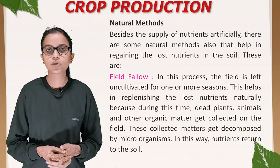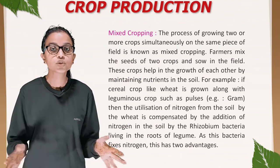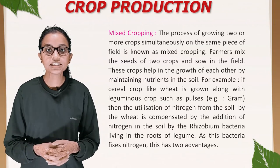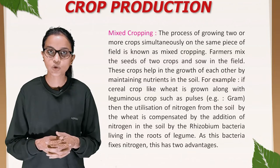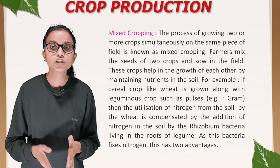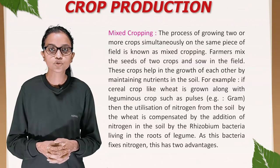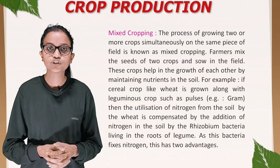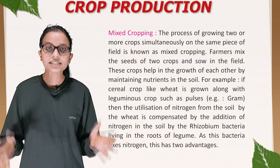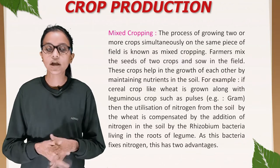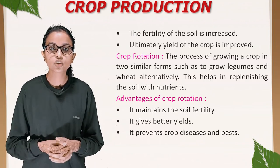Mixed cropping: the process of growing two or more crops simultaneously on the same piece of field is known as mixed cropping. Farmers mix seeds of two crops and sow them in the field, and these crops help in the growth of each other by maintaining nutrients in the soil. For example, if a cereal crop like wheat is grown along with a leguminous crop such as gram, the utilization of nitrogen by wheat is compensated by the addition of nitrogen by rhizobium bacteria living in the roots of the legume. This has two advantages: first, soil fertility is increased; second, yield of the crop is improved.